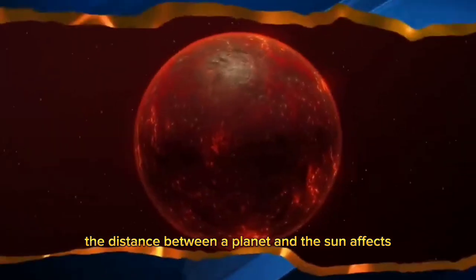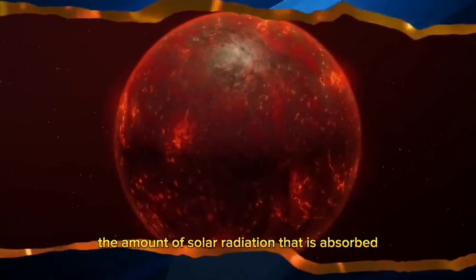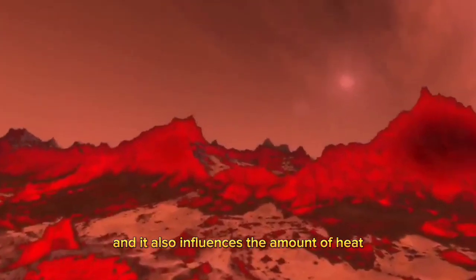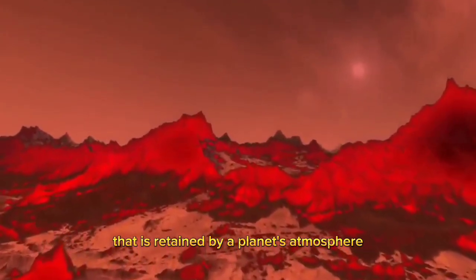The distance between a planet and the Sun affects the amount of solar radiation that is absorbed, and it also influences the amount of heat that is retained by a planet's atmosphere.